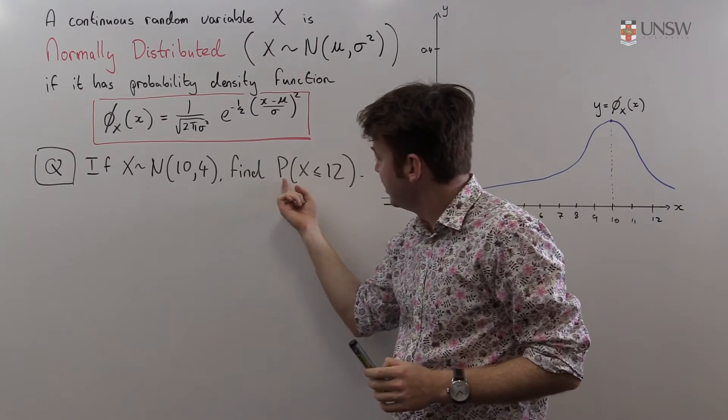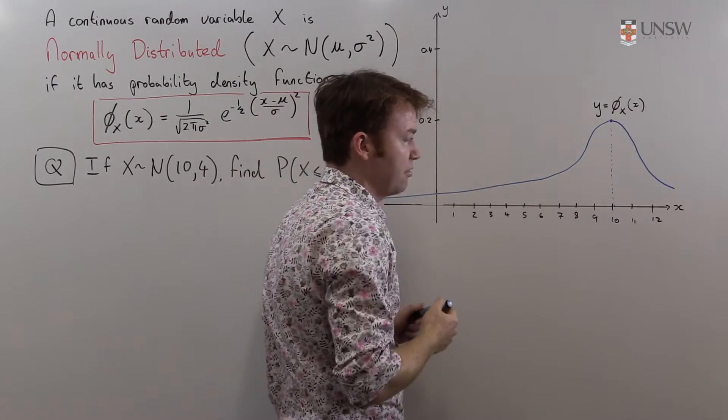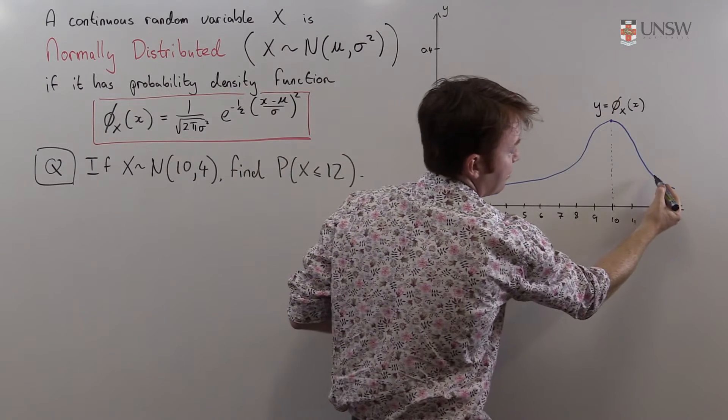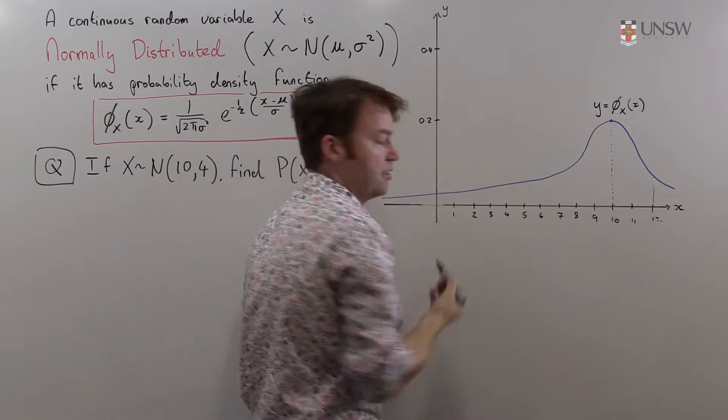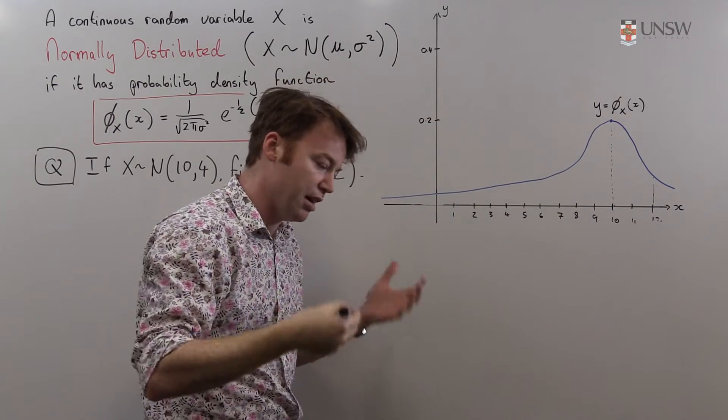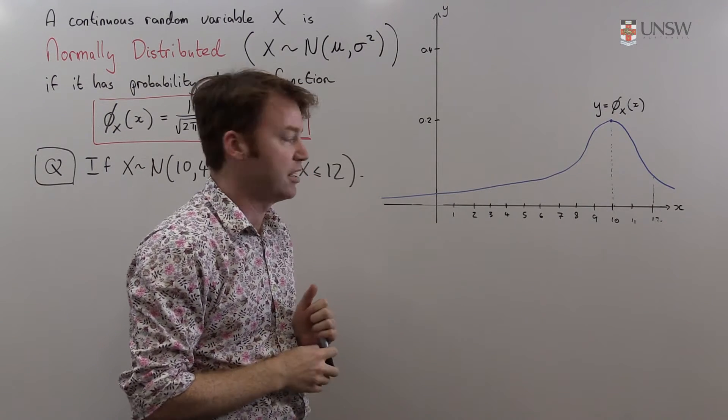Visually the probability that X is less than 12 is given here on this graph as the area underneath the probability density function from 12 back to negative infinity, and we have to use some numerical methods given to us in a lookup table to find out exactly what this is.